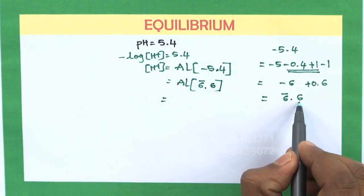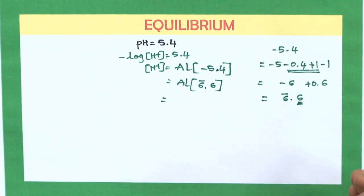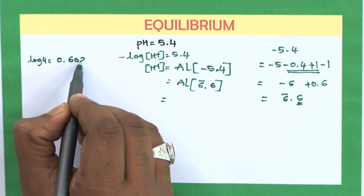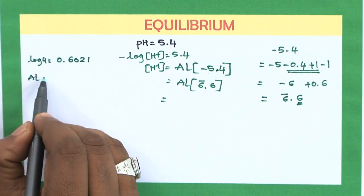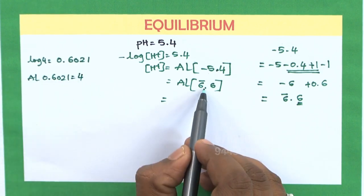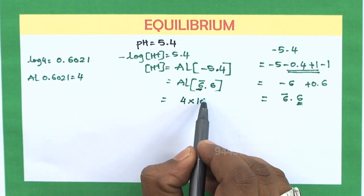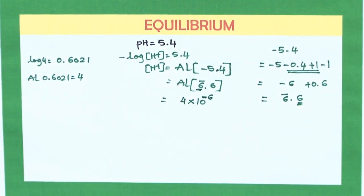We converted to a positive mantissa because you cannot calculate the anti-logarithm of negative values. Now, anti-log(6̄.0.6): we know log 4 = 0.6021, so anti-log(0.6021) = 4. Since it is approximately 0.6, anti-log(0.6) ≈ 4. The characteristic part is −6, so the result is 4 × 10⁻⁶. Hence, the H+ ion concentration is 4 × 10⁻⁶ molar.